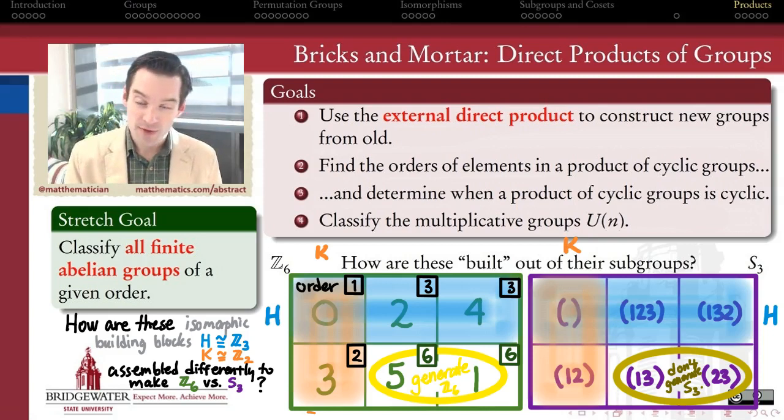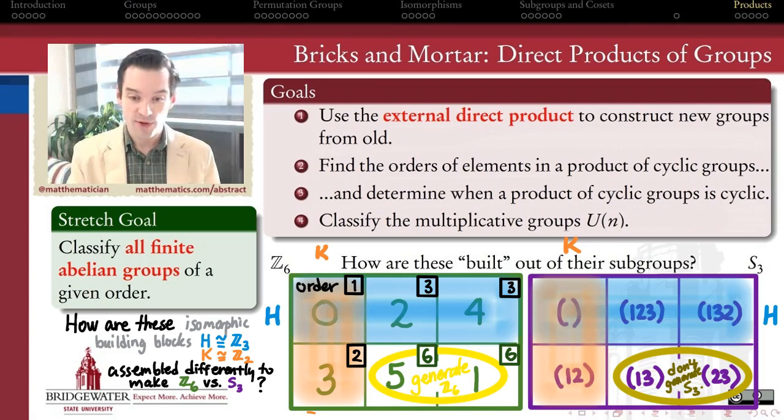And then finally the last thing we're going to be able to do in this week's videos is we're going to be able to unmask the multiplicative groups as well, the groups U(n). We're going to have enough tools in this video to be able to classify the structure of any one of these multiplicative groups U(n). It's a finite group.